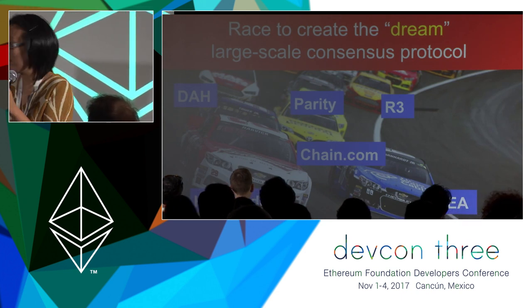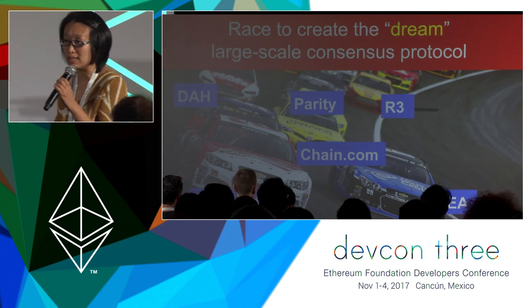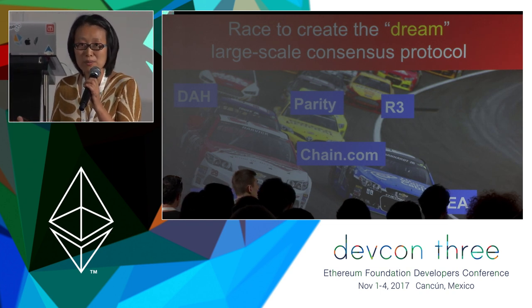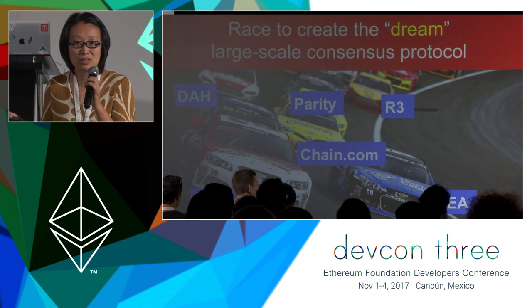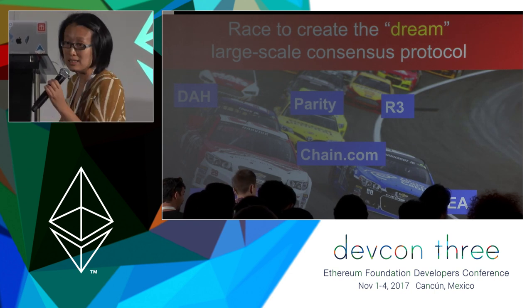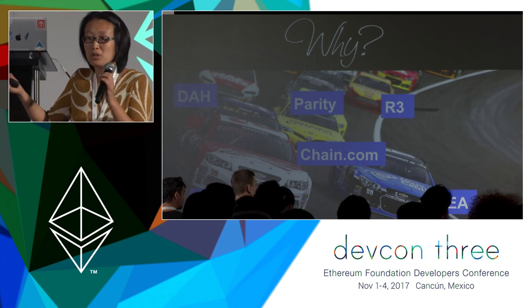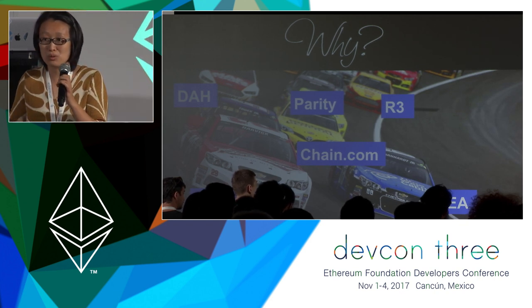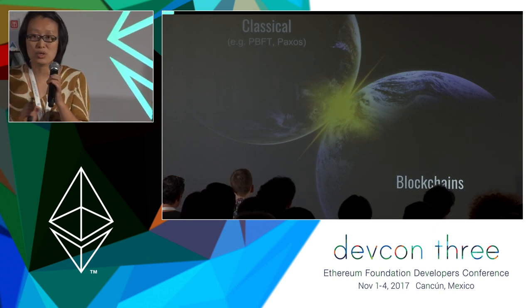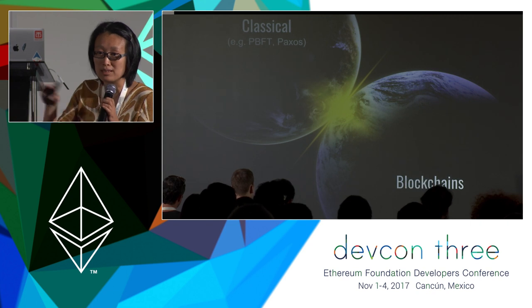Not surprisingly, all these large industry consortia and companies are racing to create the dream protocol for large-scale consensus. But at the end of the day, why after 30 years of work on distributed consensus does everyone still have to roll their own implementation? Implementing consensus is very much like implementing crypto — it's very tricky and error-prone. To understand why there still isn't a dream protocol, it helps to understand the consensus landscape, which I'll discuss before talking about Thunderella.